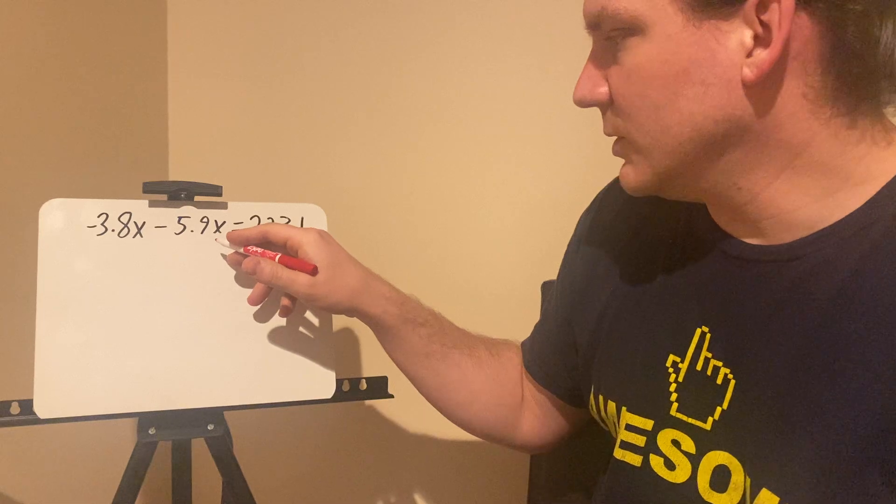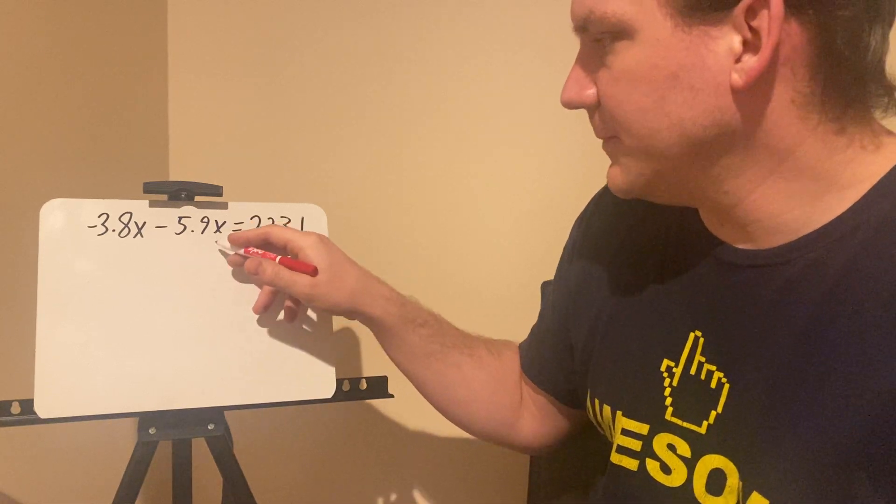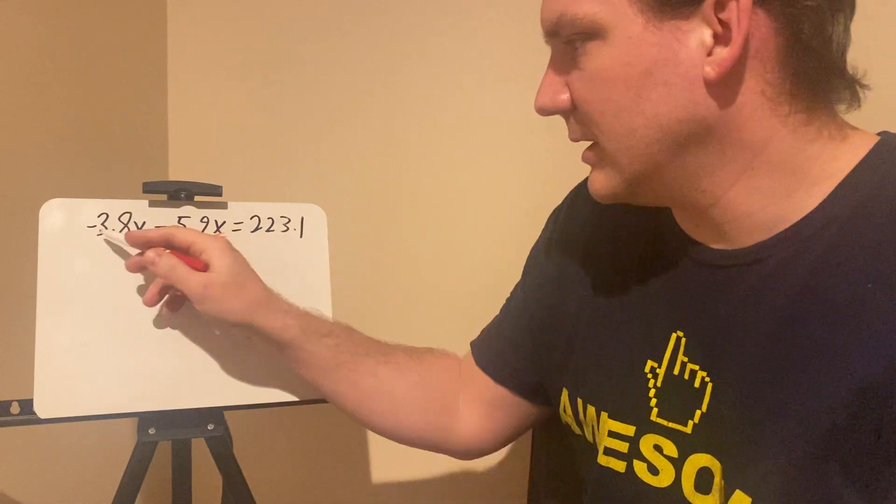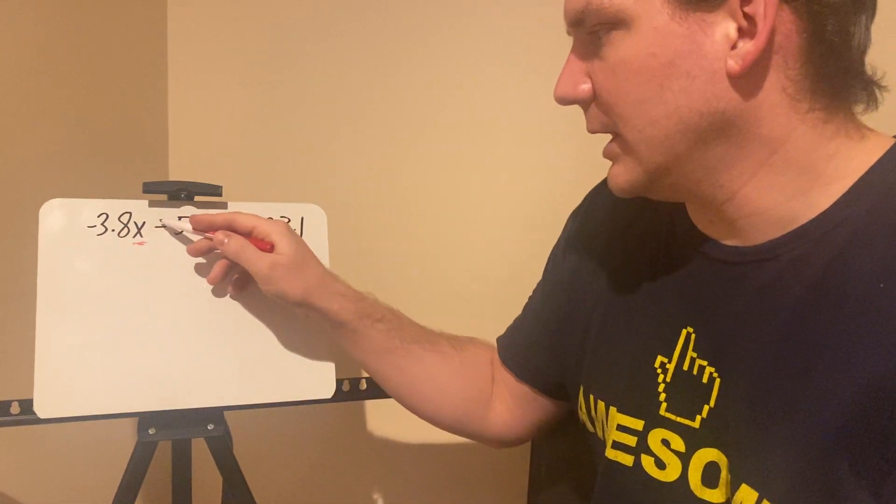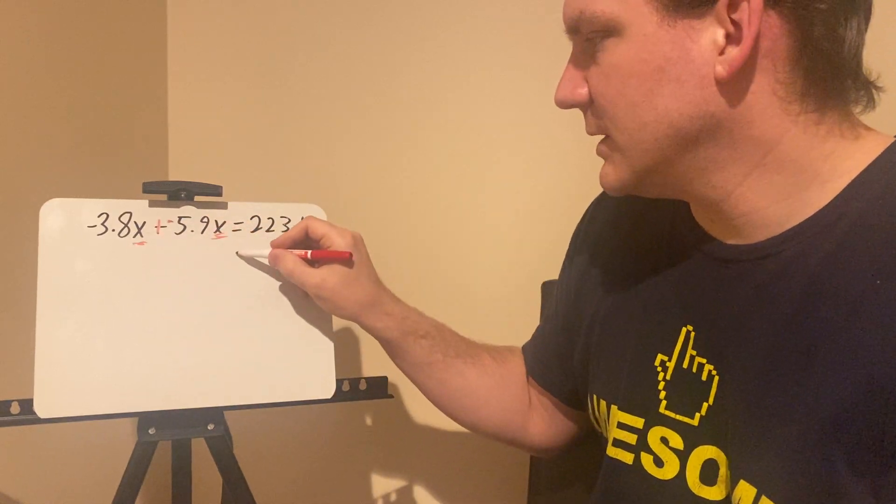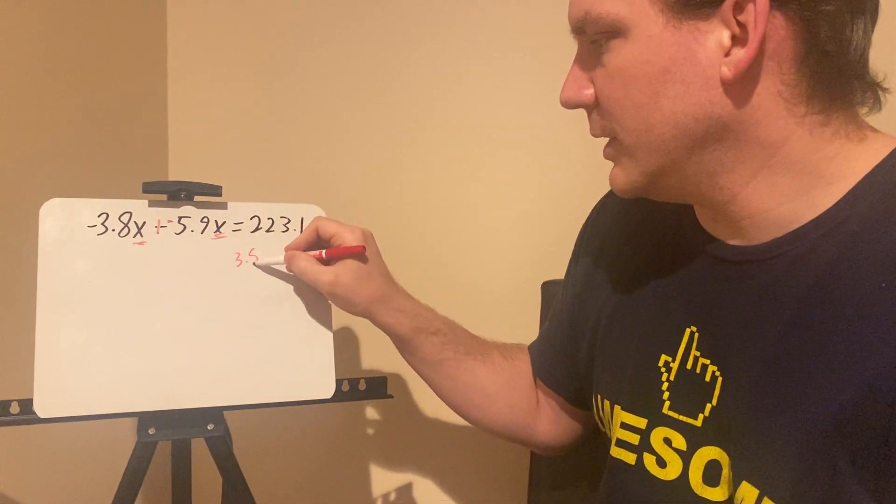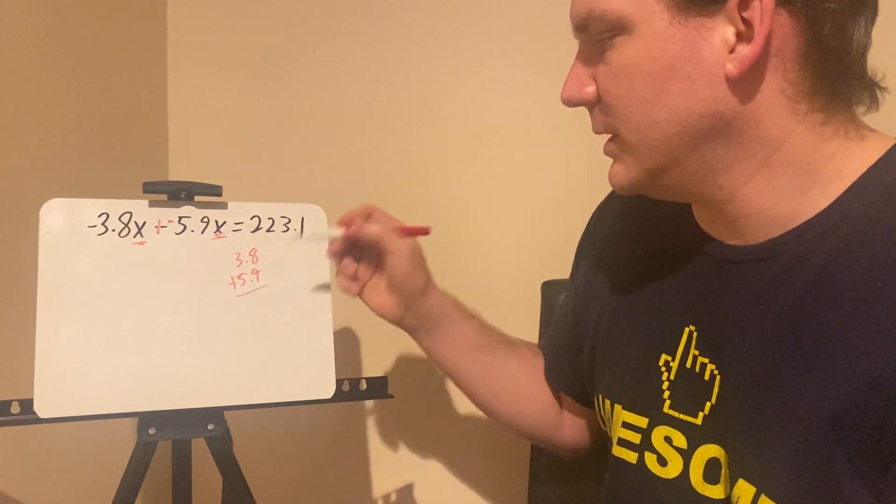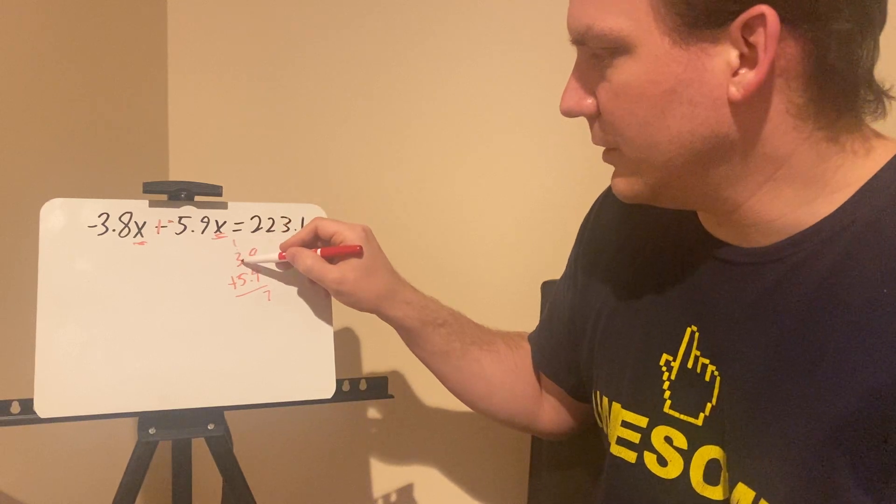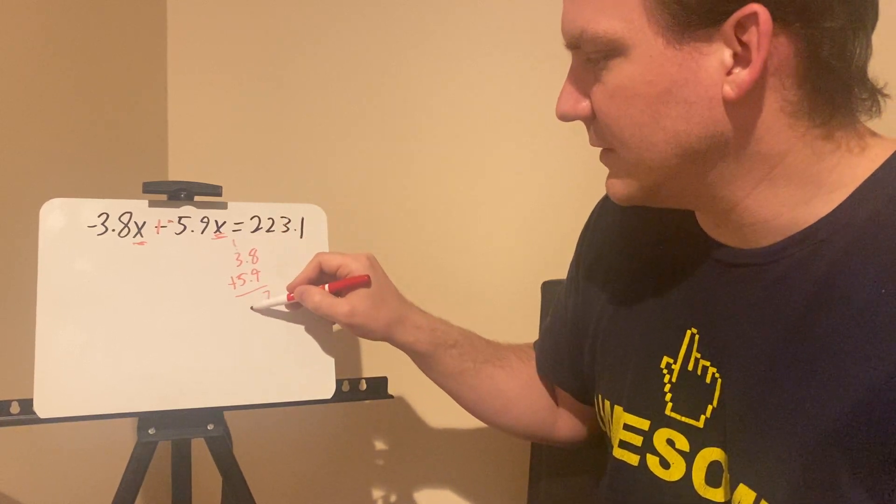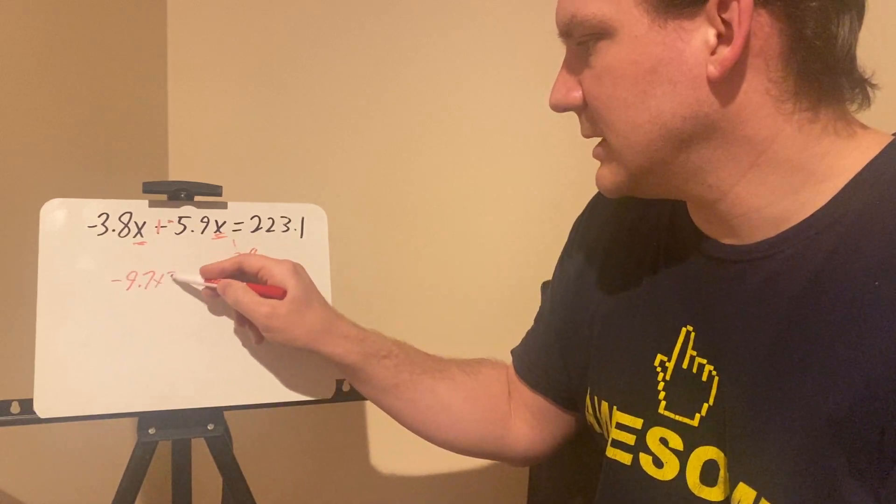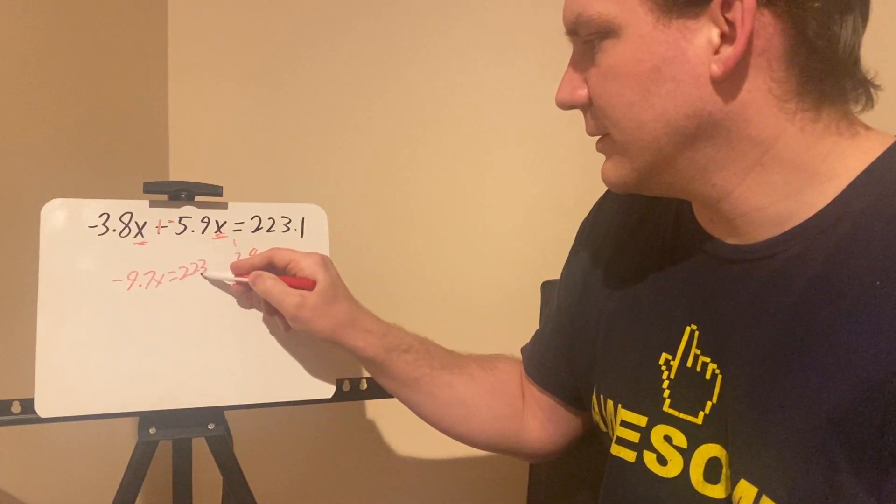This one here now has two decimals that it wants us to combine. Again, we have both of these are x terms. Now these ones are dealing with negatives. So I have negative 3.8 minus 5.9, which you could consider plus negative. So I'm adding these two negatives, which means I'm basically just going to do 3.8 plus 5.9, and it will be a negative number. Eight plus nine is 17. One plus three is four plus five is nine. Bring my decimal down, so it's going to be negative 9.7x equals 223.1.